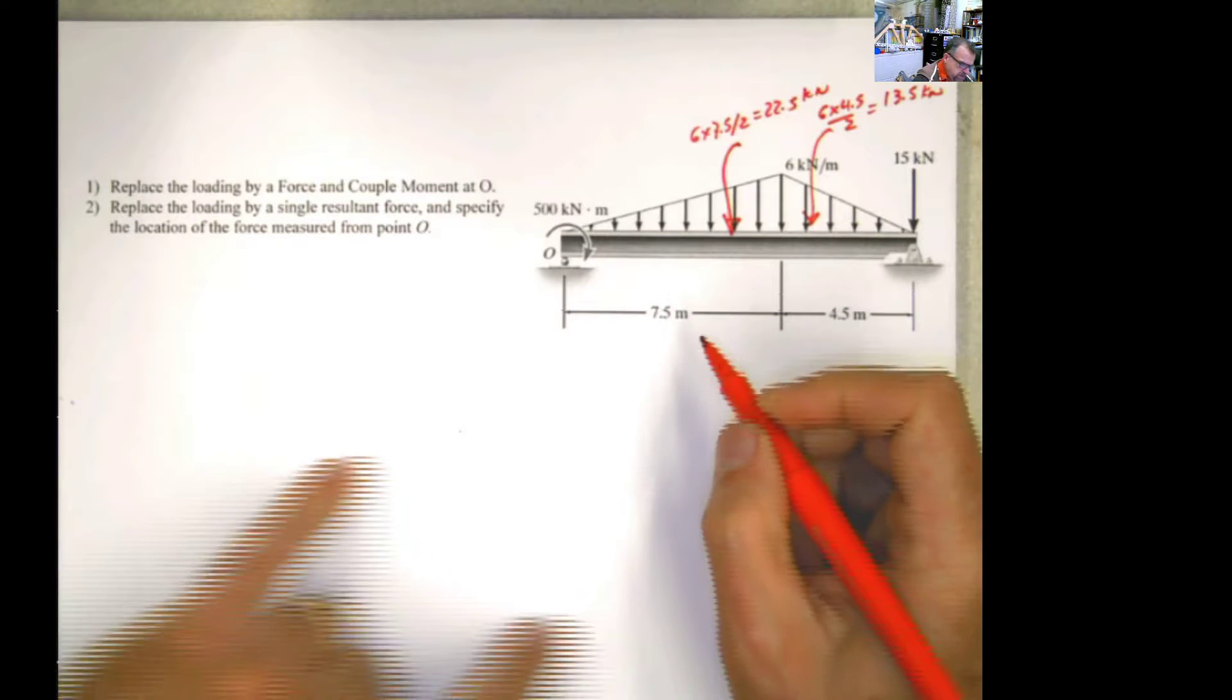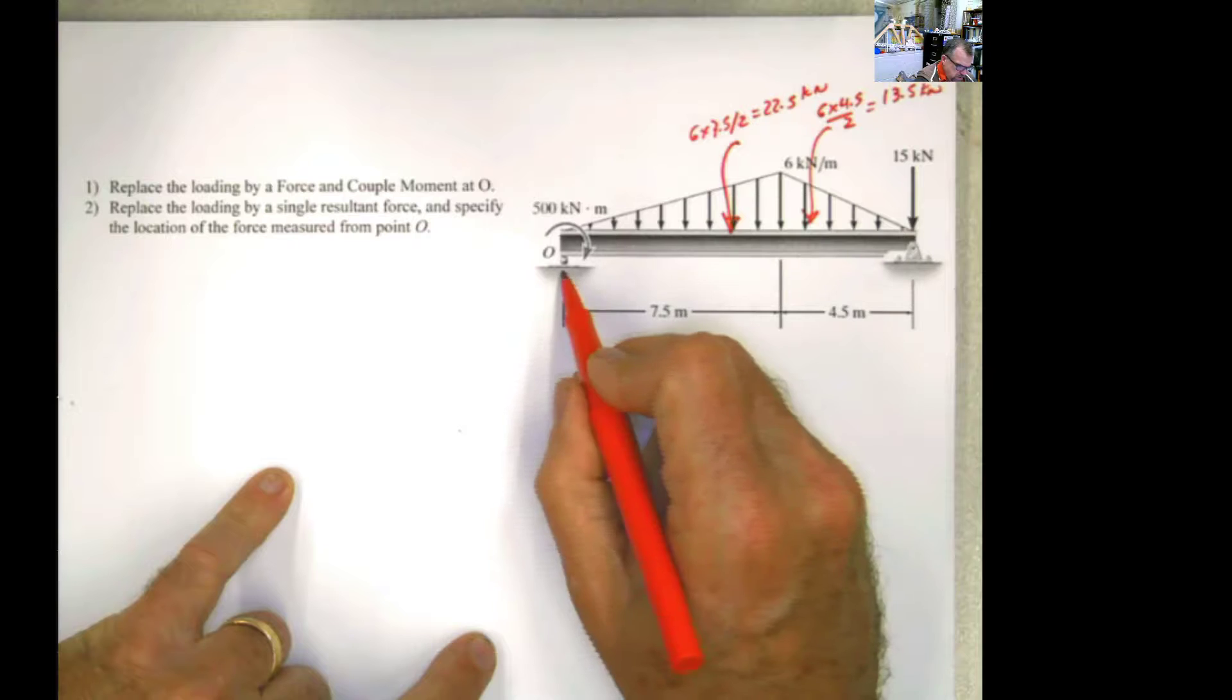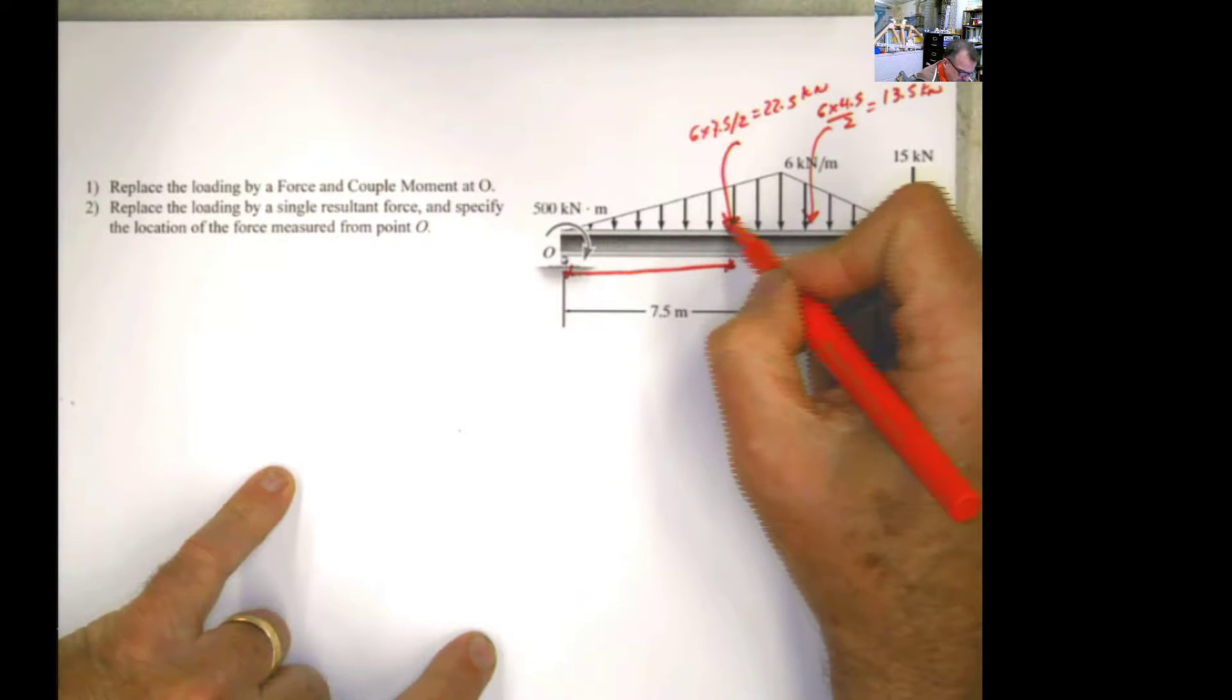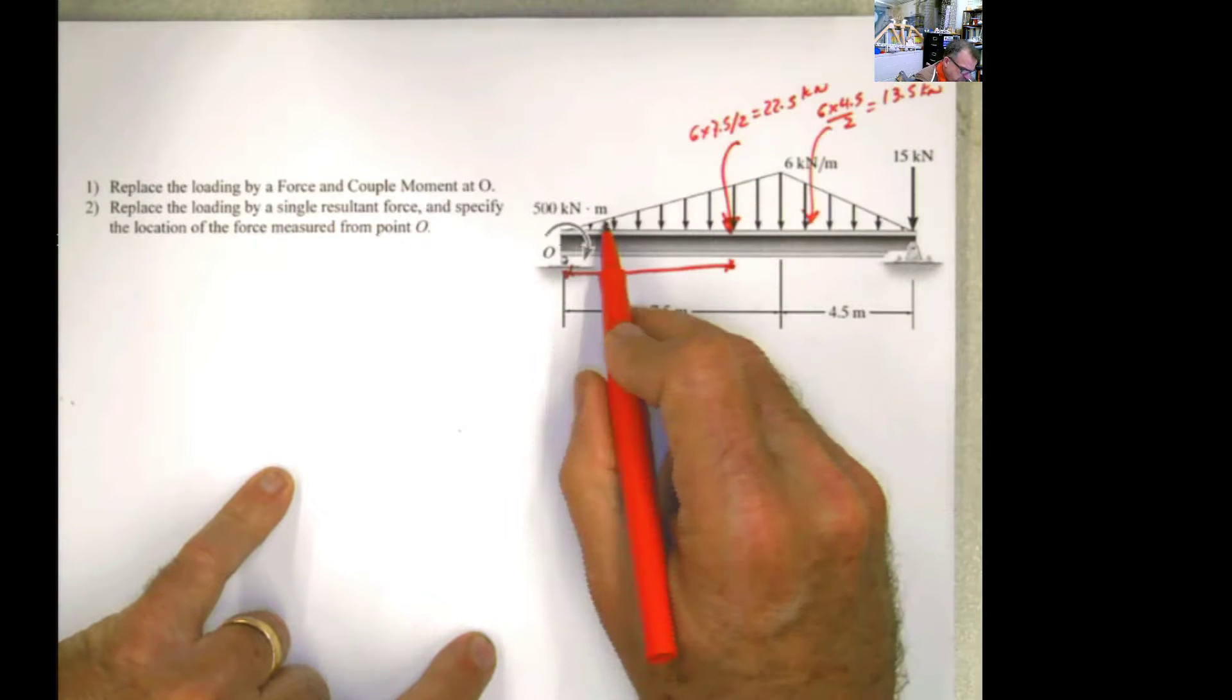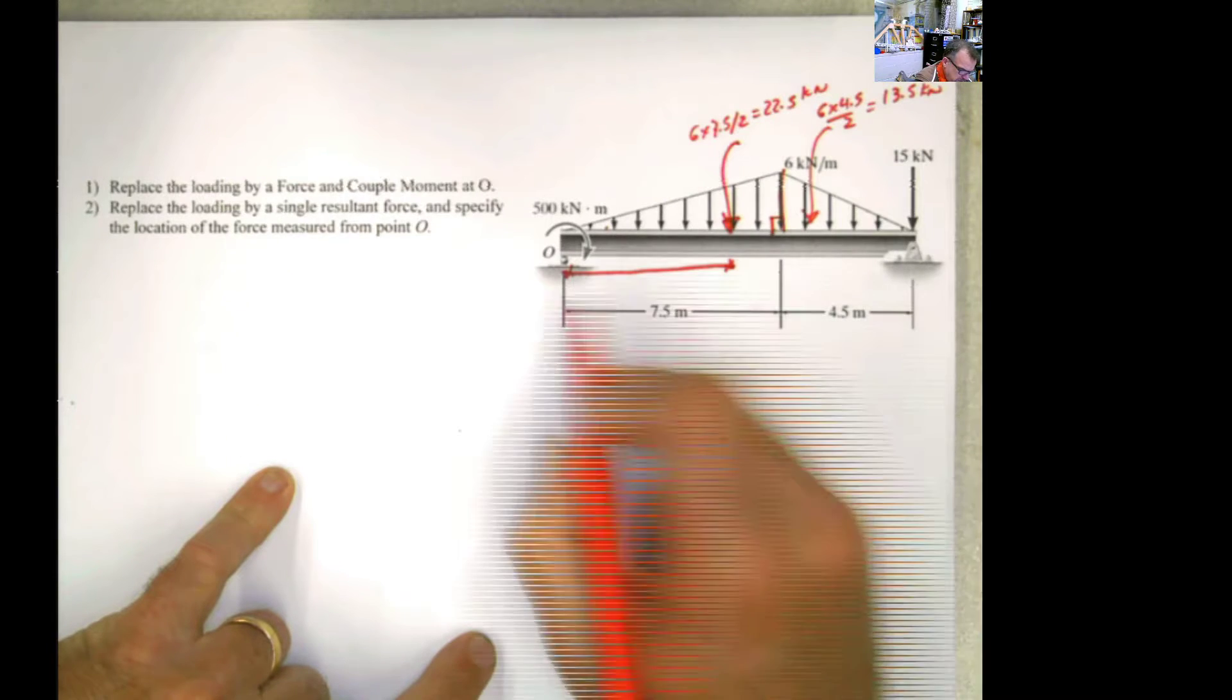The other thing that we need is the location of these forces. Remember, in a triangular distributed load, the location of the equivalent concentrated force is going to be 2/3 from the acute angle, or 1/3 from the right angle.